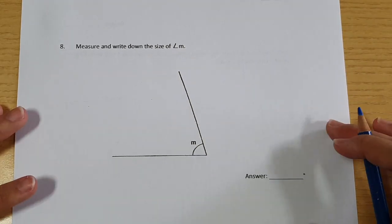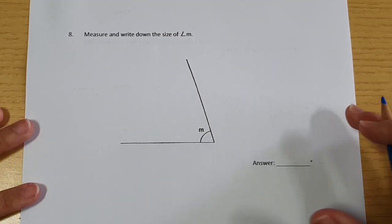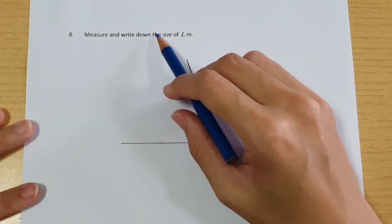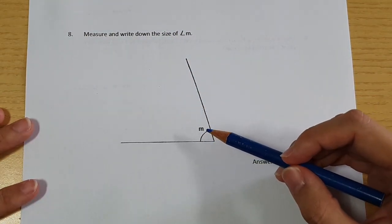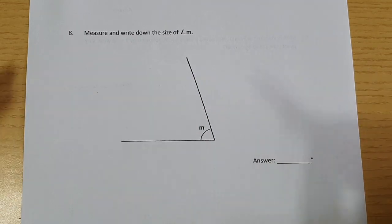Question number 7, number 8. The question says, measure and write down the size of angle M. Angle M is here. For this question, there's no protractor drawn. So we have to use our own protractor.